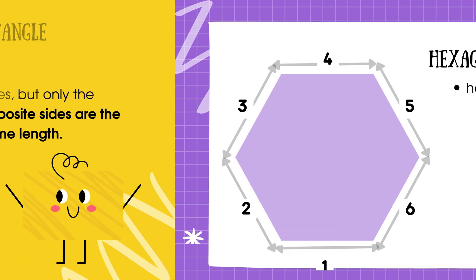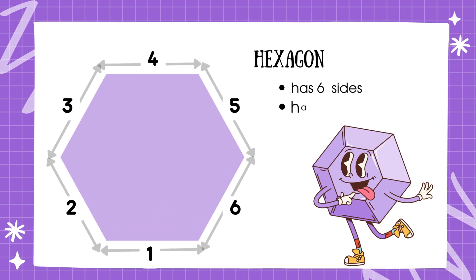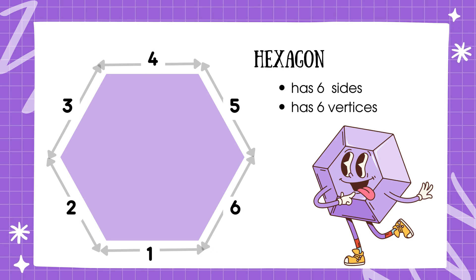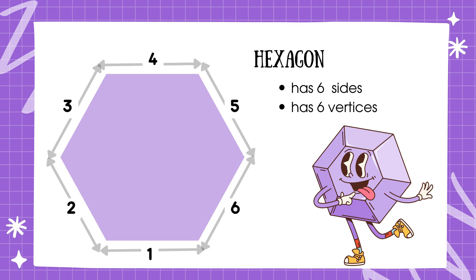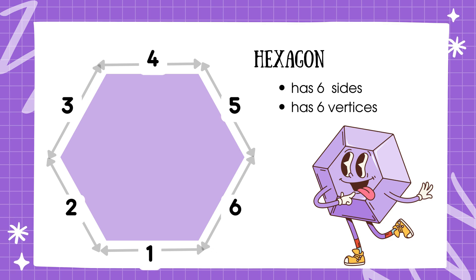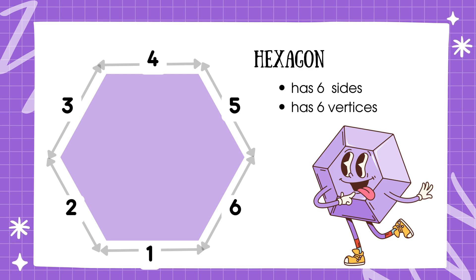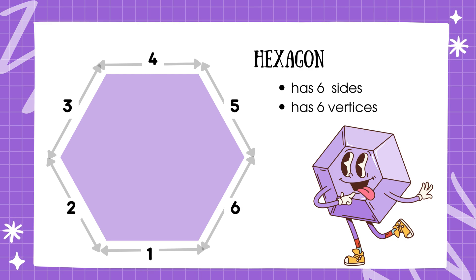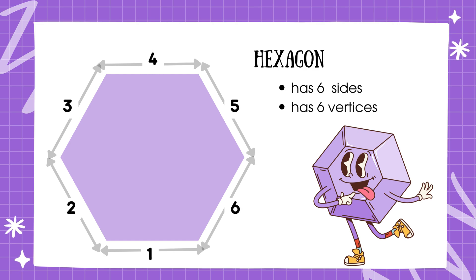And this is a hexagon. It has six sides. Some hexagons are regular, which means all sides and angles are the same. But hexagons can also have different side lengths.